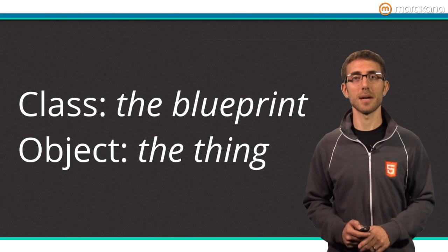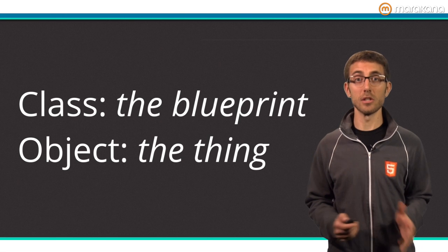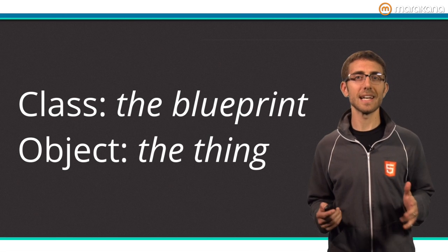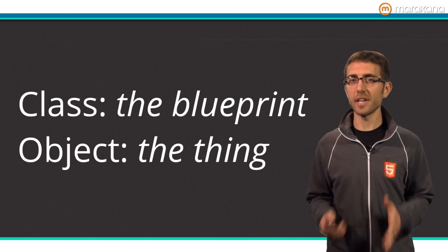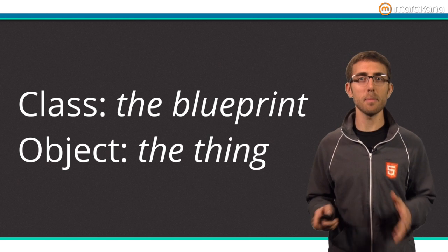A quick primer on classes and objects. A class defines how objects look and how they behave. A class is like an idea, and to turn that idea into reality, you need an object. An object is like a physical thing, something you can create from a class and manipulate on its own.